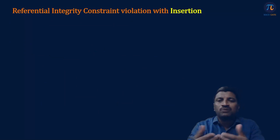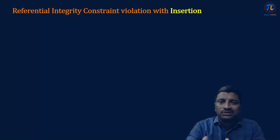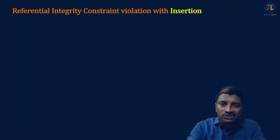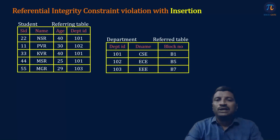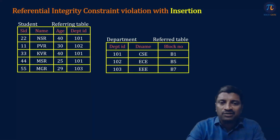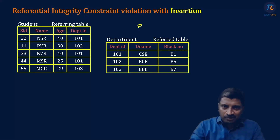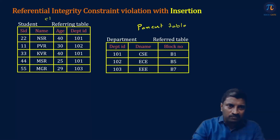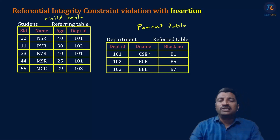Now when we do some operations on the records of the tables — something like insertion, deletion, updation — then there is a possibility of violation of referential integrity constraints. Let us discuss each of these operations and what are the possibilities of violation. Consider the same example: we have student table and department table. This is our parent table and this is our child table. When we insert a new record in parent table, there is no chance for violation. I can insert the records of my own choice.